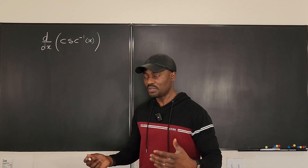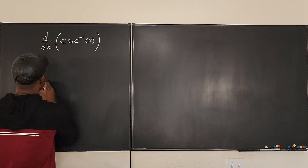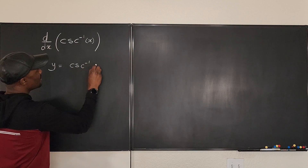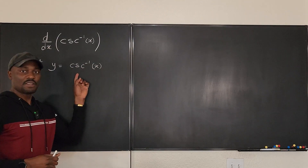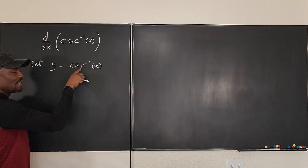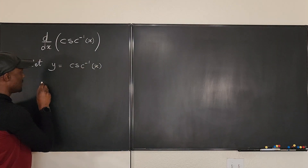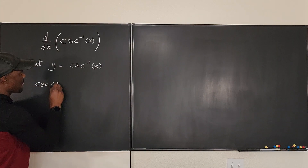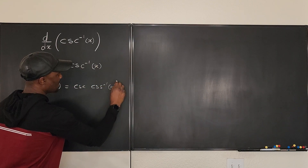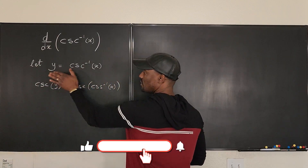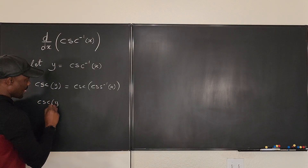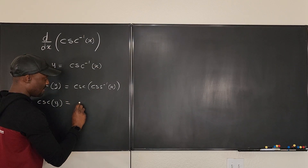The first thing, as usual, is to rewrite this expression. Let y equal cosecant inverse of x. Because this is the cosecant, we take cosecant of both sides to undo the cosecant inverse: cosecant of y equals cosecant of cosecant inverse of x. On the right-hand side this undoes itself, leaving just x, so cosecant y equals x.